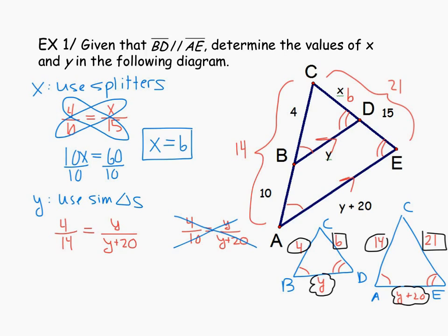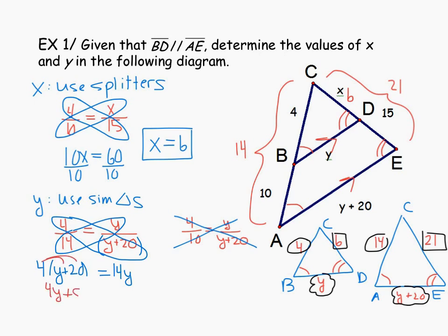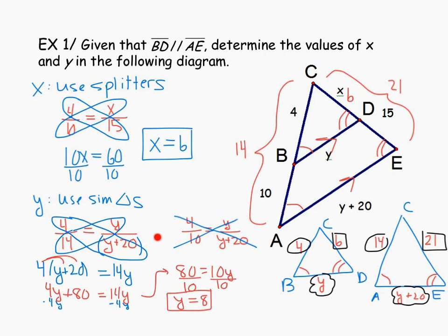To solve, we cross-multiply: 4 times (Y + 20) equals 14Y. Distributing the 4 gives 4Y + 80 = 14Y. Subtracting 4Y from both sides: 80 = 10Y. Dividing both sides by 10, Y equals 8. You have to be careful about when to use similar triangles versus the splitter theorem. We could not use the side-splitter theorem to find Y — Y requires using those similar triangles.